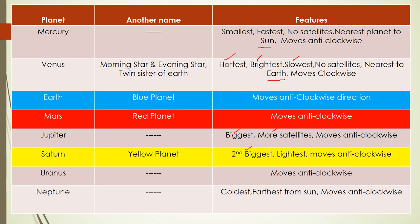Uranus moves in anti-clockwise direction. Neptune — its features are: it is the coldest planet and it is farthest from the sun. Nearest from the sun is Mercury and farthest from the sun is Neptune. It moves in anti-clockwise direction.